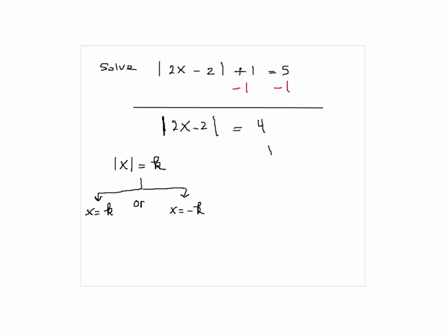So in this case, you have to do the same thing, except instead of X, we have this expression here. So it would be 2X minus 2 is equal to 4, or 2X minus 2 is equal to negative 4.